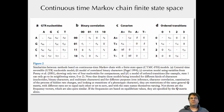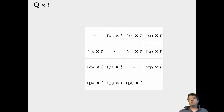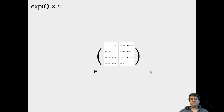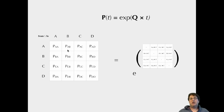We have this instantaneous rate matrix — often called Q — with the instantaneous rate going from A to B, A to C, and so forth. To figure out the probabilities of change over a certain time T, we multiply that rate matrix by time and then exponentiate that matrix to get our transition probability matrix. So I go from my instantaneous rate matrix to a probability matrix and can say: given that I start in state A and wait 15 million years, what's the probability I'm in A, B, C, or D at the end?